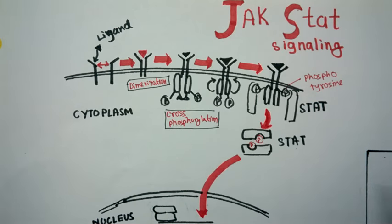Janus is actually the Greek god of transition, and as these kinases are associated with a cell signal transduction pathway, they are called Janus kinases. STAT stands for signal transduction and activator of transcription, so it is associated with signal transduction.